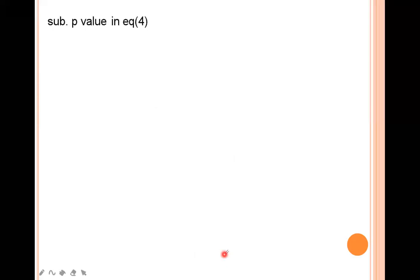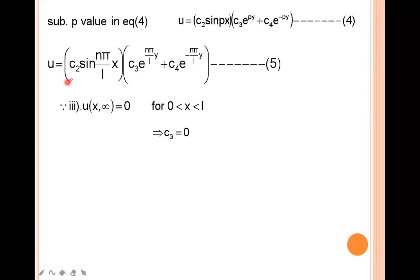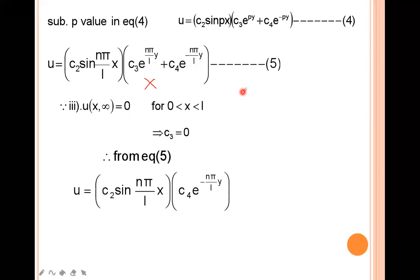Now applying the third boundary condition: u = 0 when y tends to infinity. From this we get c₃ = 0. Putting c₃ = 0 in the equation, we get u = c₂sin(nπx/l) · c₄e^(-nπy/l). Rewriting: u = c₂c₄ · sin(nπx/l) · e^(-nπy/l).